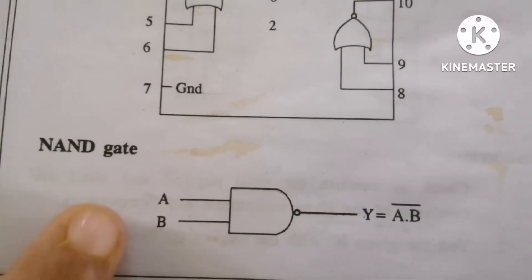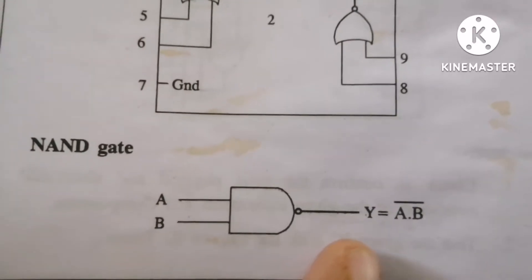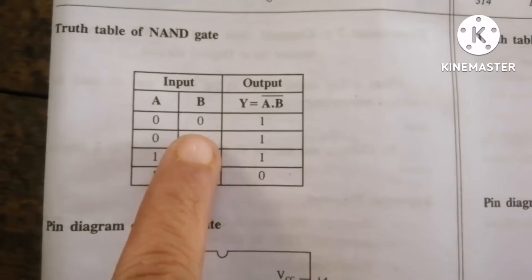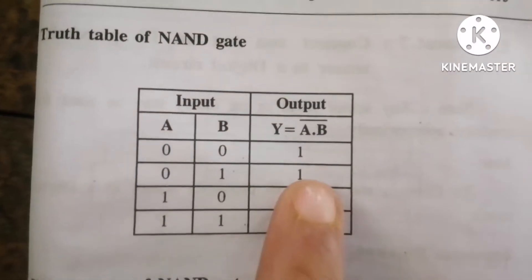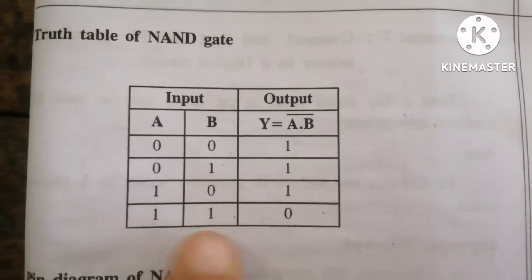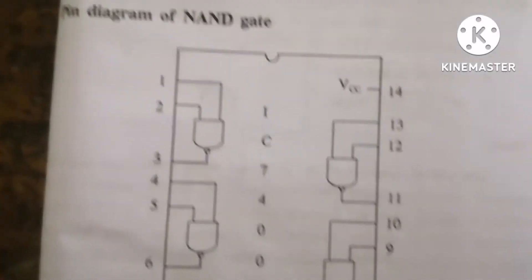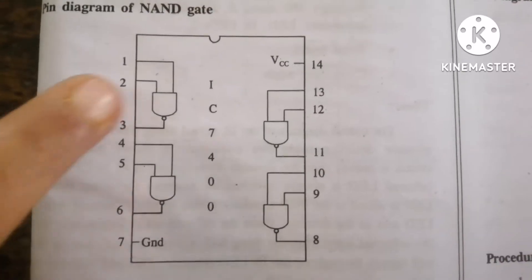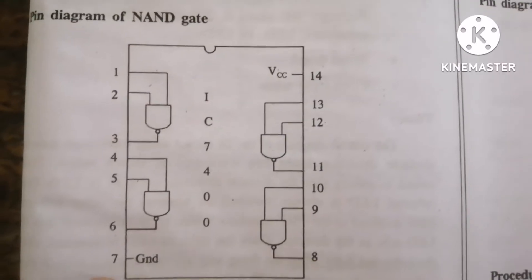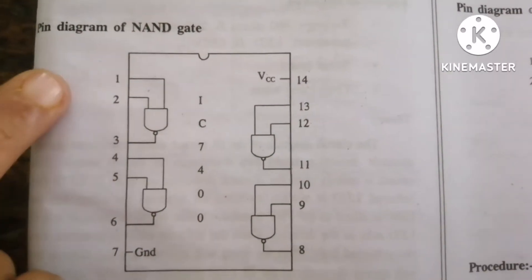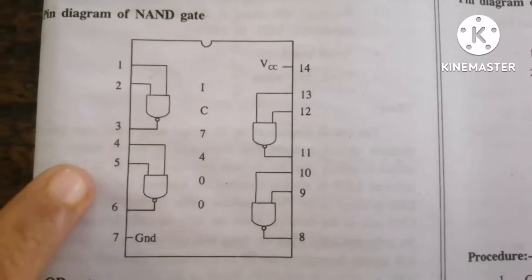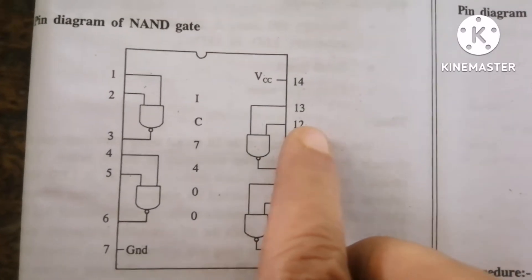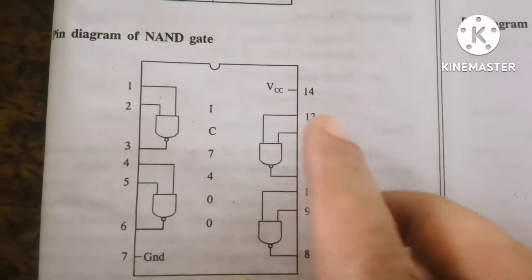For the NAND gate, there are two inputs A and B and one output. The truth table: when both inputs are 0, output is 1; for 01, output is 1; for 10, output is 1; when both inputs are 1, output is 0. The IC number is 7400. The pinout: pin 7 is ground, pin 14 is VCC. Pins 1 and 2 are inputs, pin 3 is output; pins 4 and 5 are inputs, pin 6 is output; pins 9 and 10 are inputs, pin 8 is output; pins 12 and 13 are inputs, pin 11 is output.